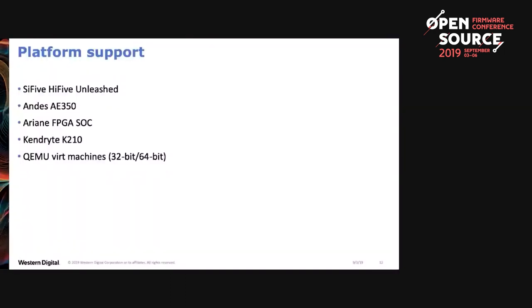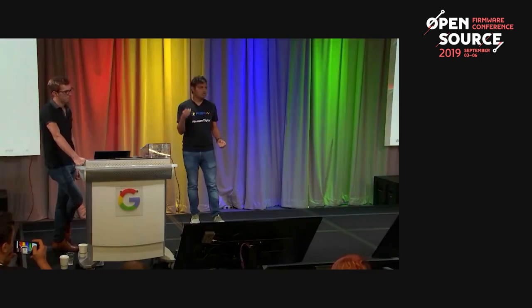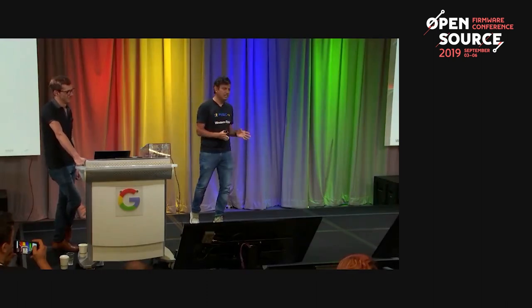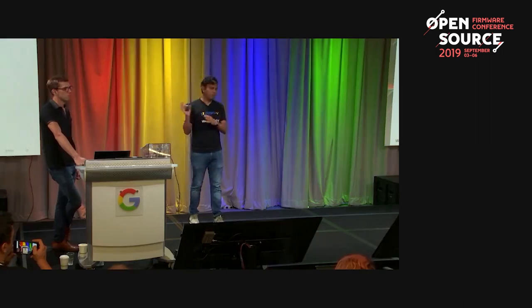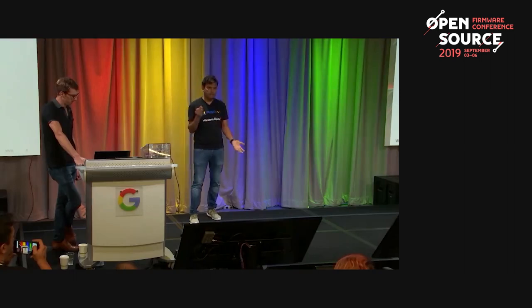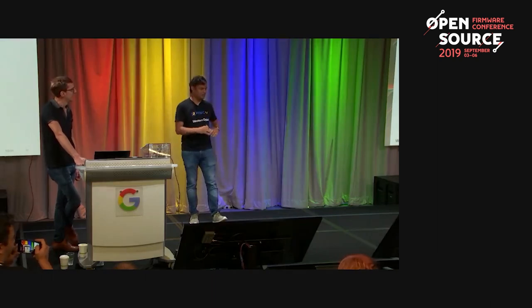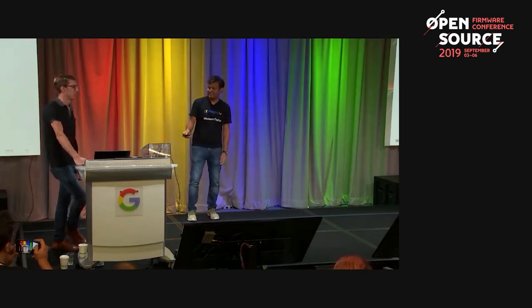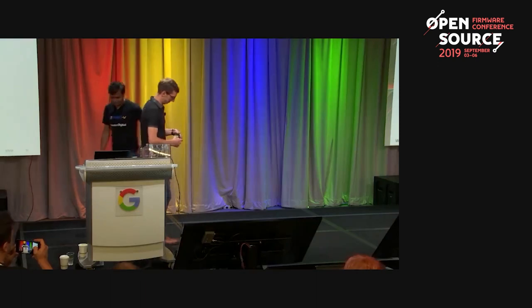Currently multiple platforms are supported in OpenSBI: SiFive, HiFive Unleashed, Andes, Ariane FPGA SoC from ETH Zurich, and a super cool $20 Kendryte K210 Chinese board — though it has no MMU, only 6 MB of SRAM, so you have to run no-MMU Linux with patches on the mailing list. And obviously QEMU, which is the coolest software ever, because you can implement and verify everything in QEMU. Speaking of QEMU, I'll switch to Alistair.